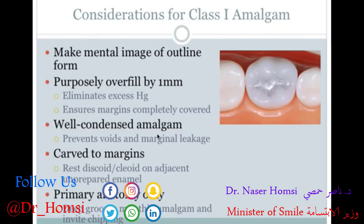Condense the amalgam really well to prevent voids and marginal leakage. Carve to the margins of your outline form — you can use a discoid-cleoid instrument rested on adjacent unprepared enamel and slowly scrape away material until it matches the tooth. You can carve in primary anatomy, but deep grooves and secondary accessory grooves are not recommended because they might unnecessarily thin the amalgam and invite chipping and fracture.